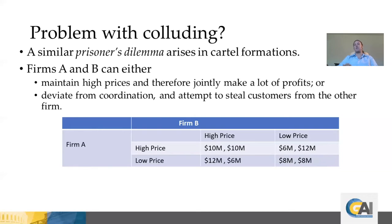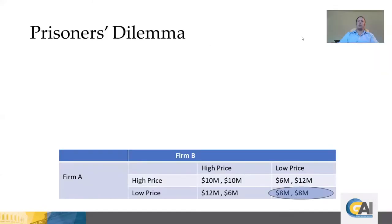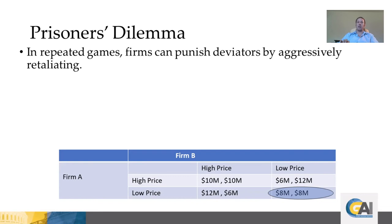The question becomes: why would any two firms ever collude? To answer this, we need to consider things we abstracted away from. One issue is that the firms in our example could play this game only once. However, firms within an industry interact with each other repeatedly over time, and this may allow them to aggressively retaliate against firms that charge low prices. If I encounter a firm charging a low price, I might also charge low; but if I don't encounter such behavior, I might maintain a high price. This type of behavior might give rise to collusion.